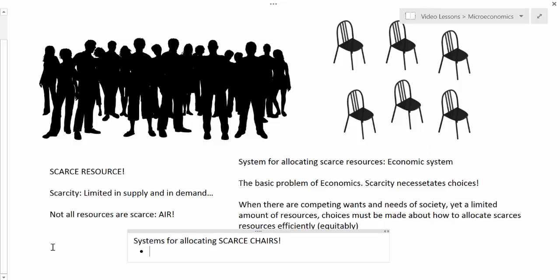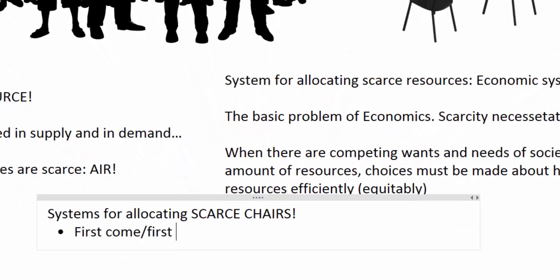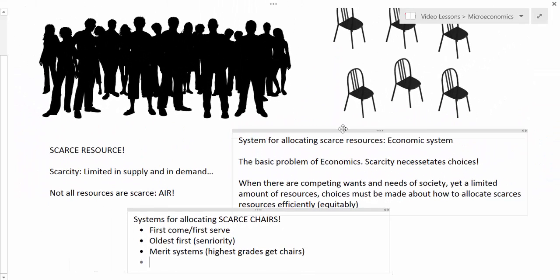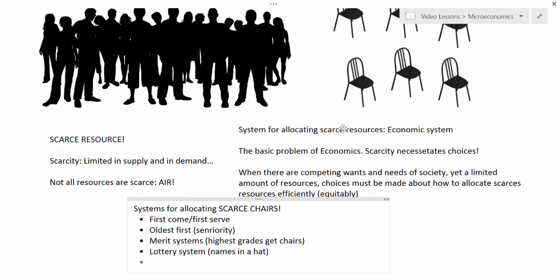Some of the more popular systems tend to be first come, first served — whoever gets to class first gets a chair. Other systems proposed include oldest first, or seniority: whoever is oldest gets a chair, whoever is youngest does not. Another proposal is merit — those with the highest grades get chairs. Students have also proposed a lottery system: put all names in a hat and the first six drawn get chairs. Ultimately, most years somebody comes up with an auction, where students bid on chairs and those willing to pay the most get them.